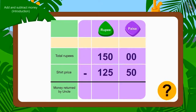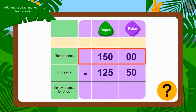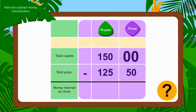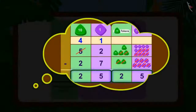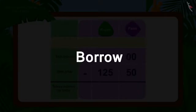Is there any paise for Rs. 150? No. Then, how will we subtract 50 paise of Rs. 125.50 from 0 paise of Rs. 150? Do you remember the borrowing process learned in the lesson of subtraction? Here, we will use the borrowing process.